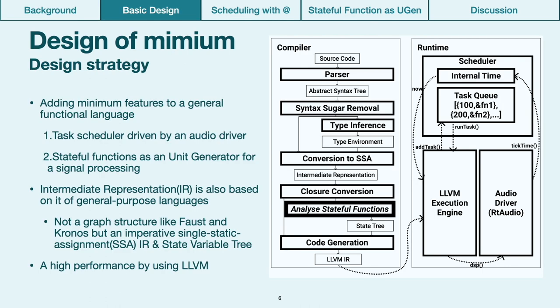Assuming these backgrounds, we designed and developed Mimium, a full-stack music programming language, which can describe everything from low-level signal processing to discrete event processing in unified semantics. The characteristic point of the design is that minimum features for sound are added to the design of general-purpose language. One is the semantics for the deferred execution of the function for temporal discrete control. Another is the stateful function for signal processing. Intermediate representation during compilation is also similar to that of general-purpose languages, not like other sound languages which have similar specifications to Mimium, such as Faust, Extempore, and Kronos.